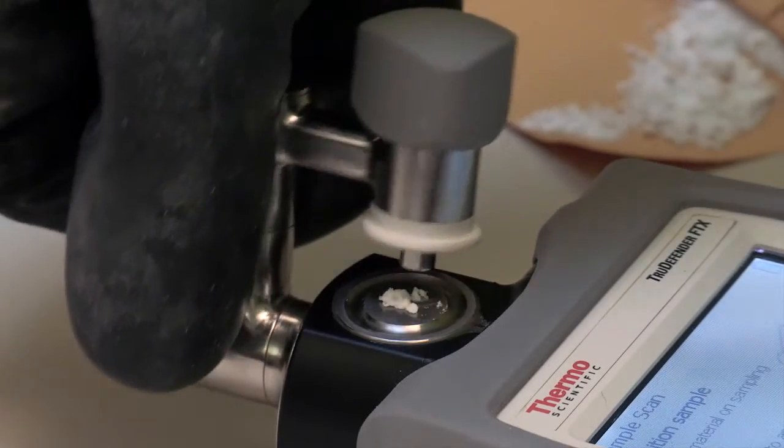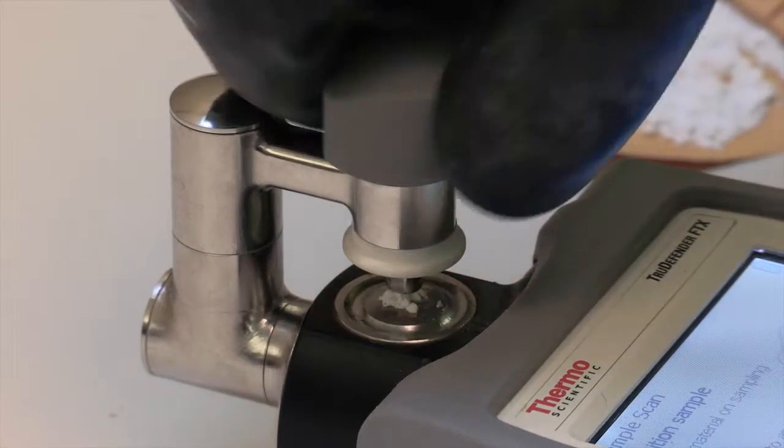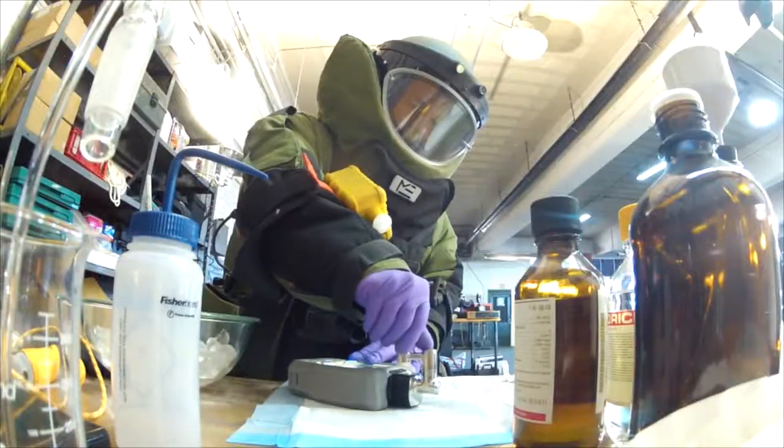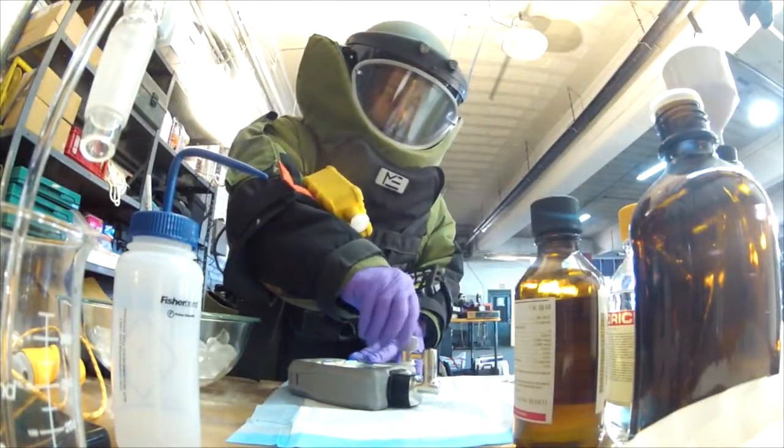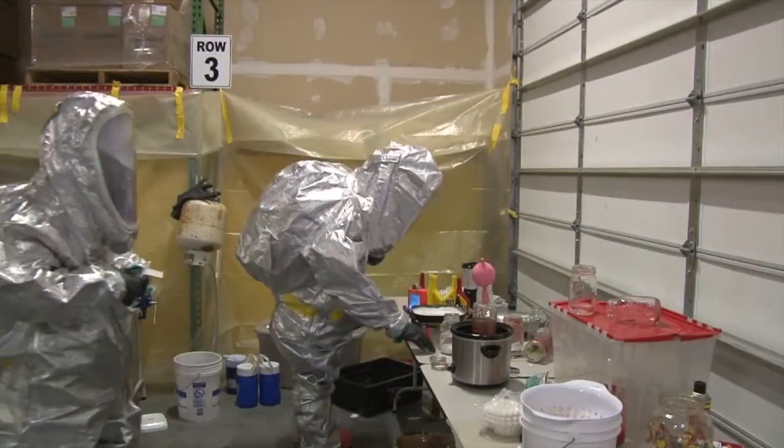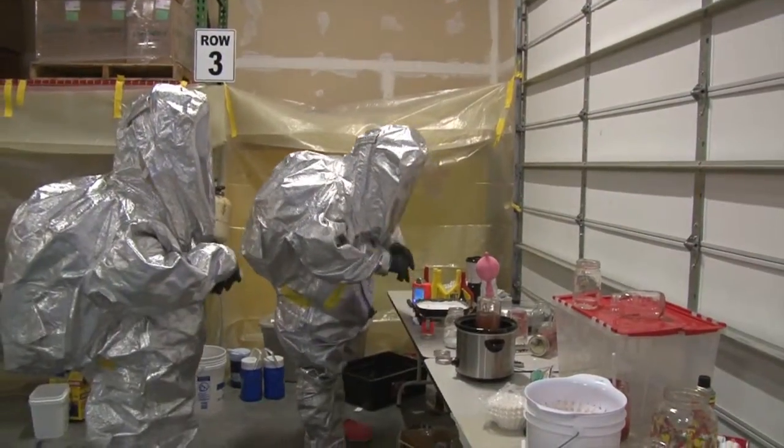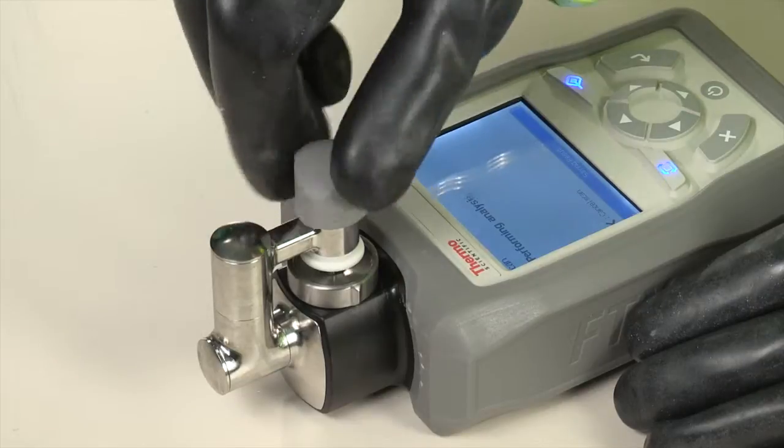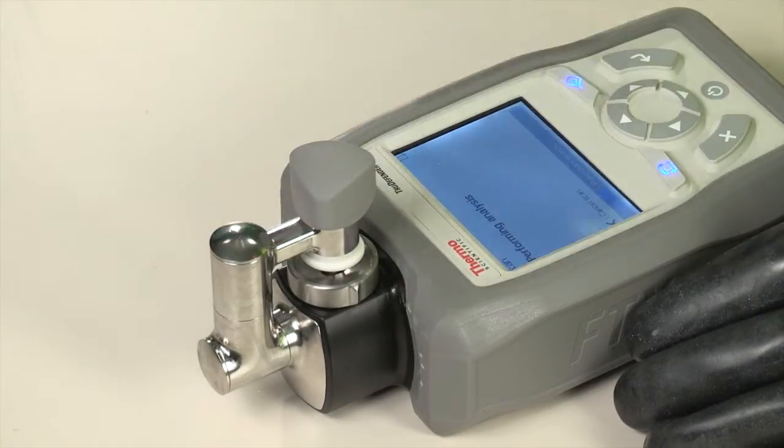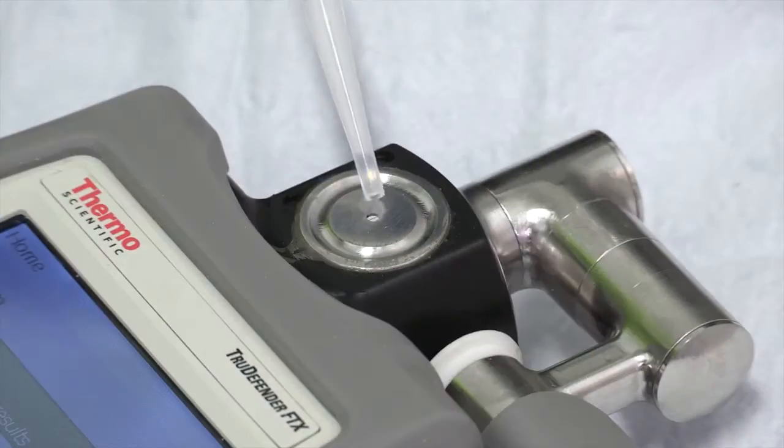The variable pressure knob allows users to apply the correct amount of pressure for a given sample. For EOD technicians, this may be less pressure to minimize risk, while for hazmat technicians testing a wide variety of unknowns, the TrueDefender FTX anvil enables increased pressure for sampling harder substances. Volatile liquids are contained within the sampling surface.